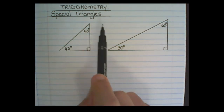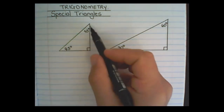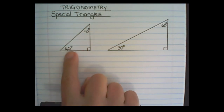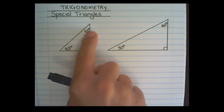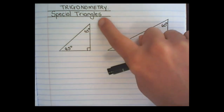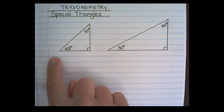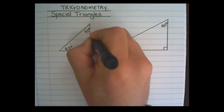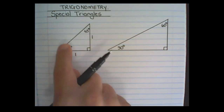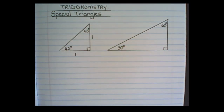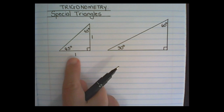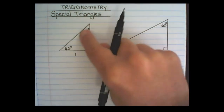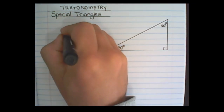Let us start with the properties of the 45-degree isosceles triangle. What we know about an isosceles triangle is that if these two angles are of equal size, then these lines are of equal length. In the special triangle we are going to use the unit of one. To find the hypotenuse we use Pythagoras: one squared plus one squared is two squared, so that length would be the square root of two.